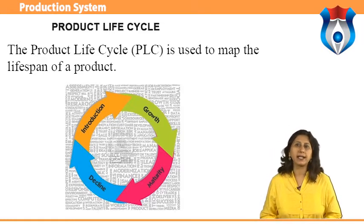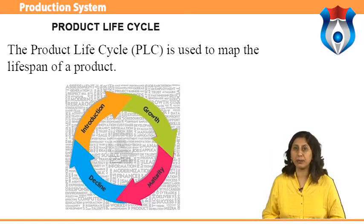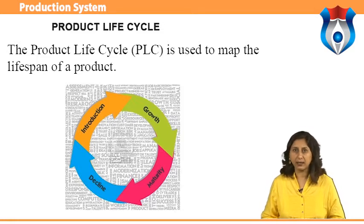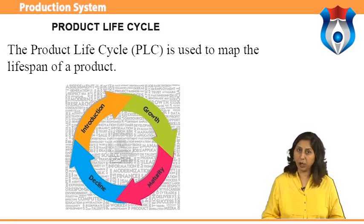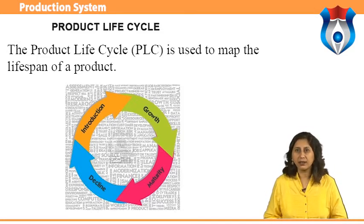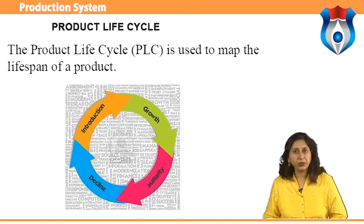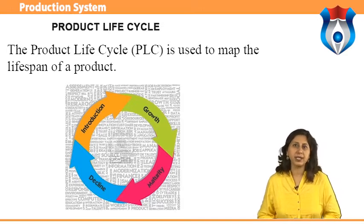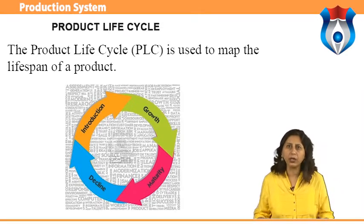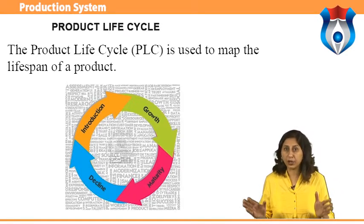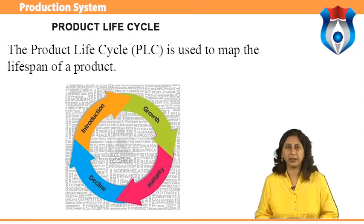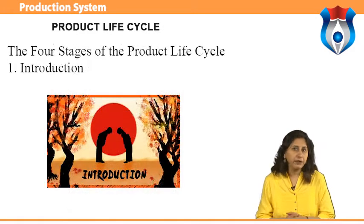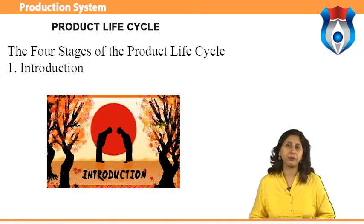One product's entire life cycle could be over in a few months, while another product could last for years. Also, the introduction stage may last much longer than the growth stage and vice versa. The four stages of the product life cycle are: introduction, growth, maturity, and decline.